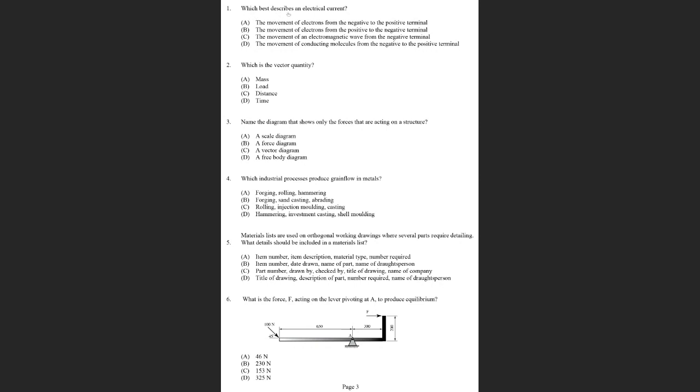Which best describes an electrical current? An electrical current is a movement of electrons, but it isn't one electron moving from the negative to the positive. It's actually an electromagnetic impulse or wave that moves from the negative terminal via the outer electrons. So C is the correct answer here.